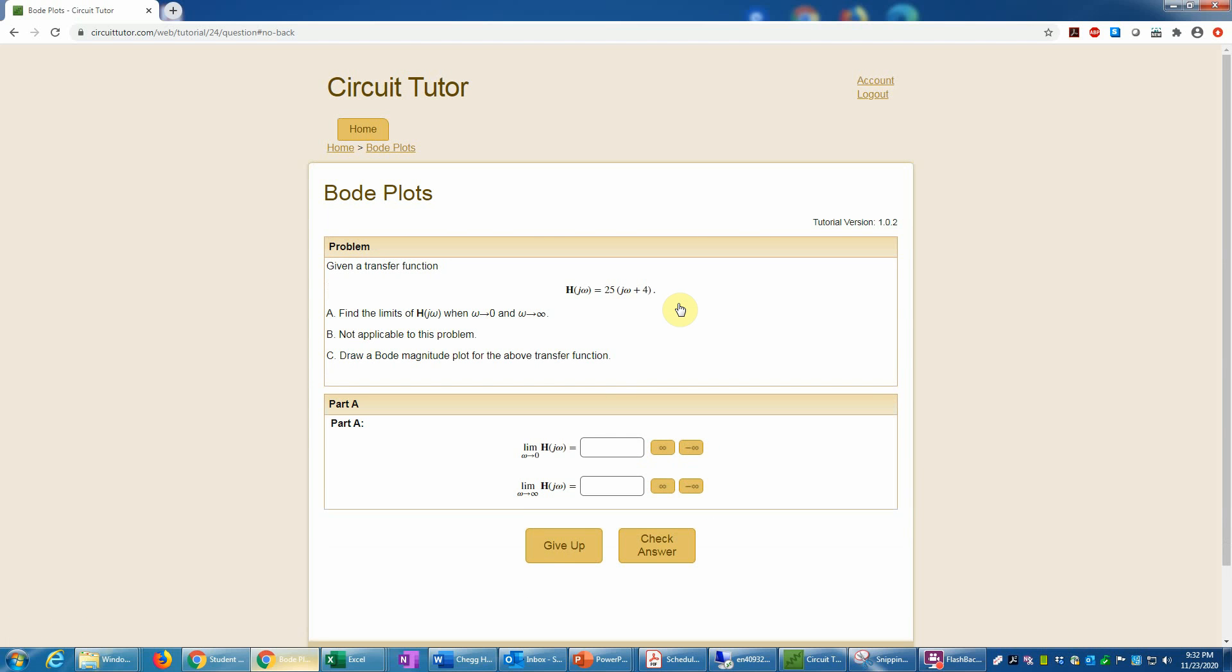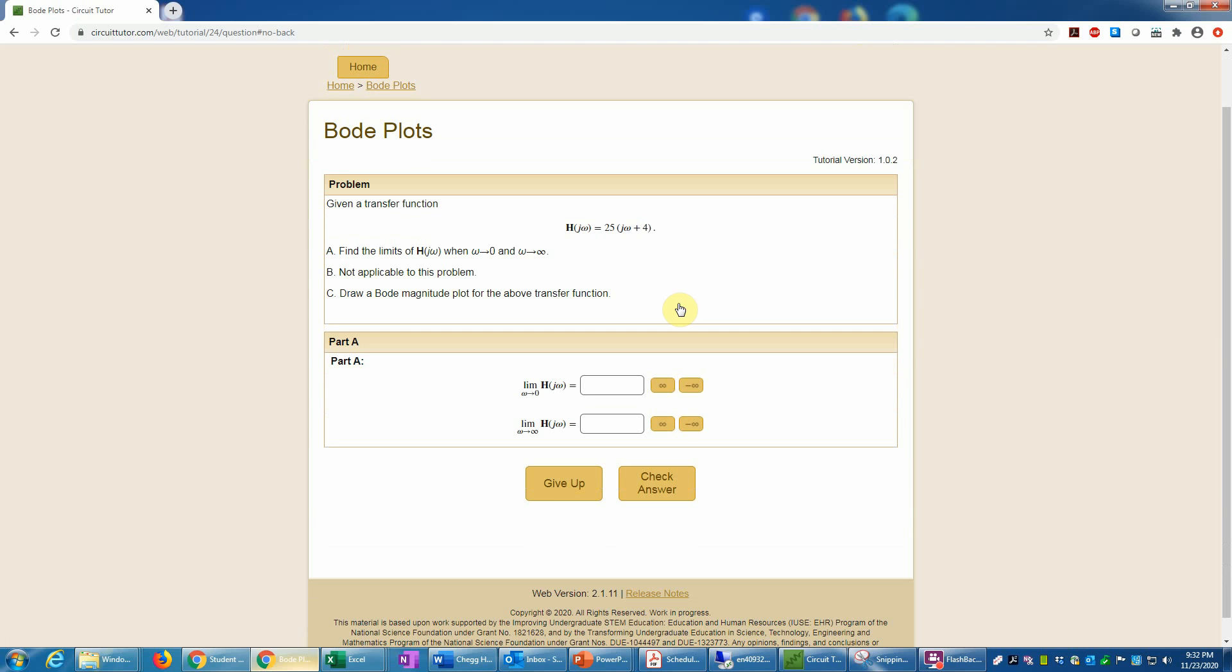Let's look at a typical problem. The first step gives us a transfer function h of j omega, and the first part is to find the limits of this function when omega goes to zero and when omega goes to infinity.